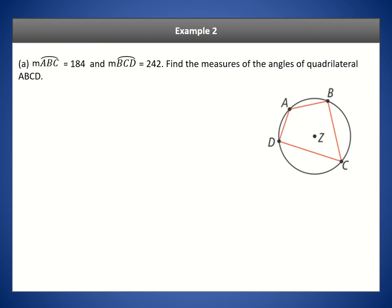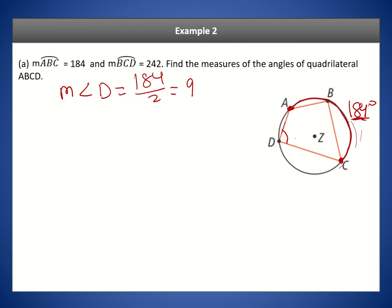In the next example, arc ABC is 184 degrees. Angle D has intercepted arc ABC — the intercepted arc is always between where the two chords end up. So the measure of angle D is half of 184, which is 92 degrees.